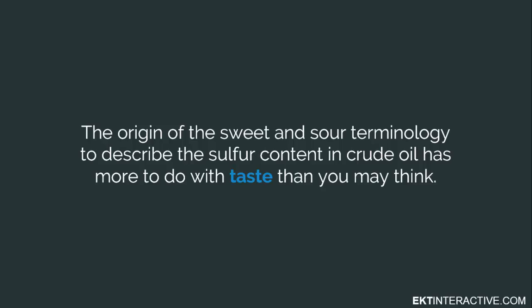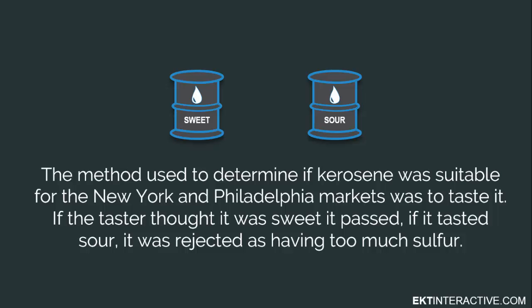The origin of the sweet and sour terminology to describe the sulfur content in crude oil has more to do with taste than you may think. In the early days of Pennsylvania crude oil production, petroleum was being used as a substitute for whale oil in indoor lighting. If a batch of kerosene had too much sulfur, it would emit an unpleasant odor when burned. The method used to determine if kerosene was suitable for the New York and Philadelphia markets was to taste it. If the taster thought it sweet, it passed. If it tasted sour, it was rejected as having too much sulfur.